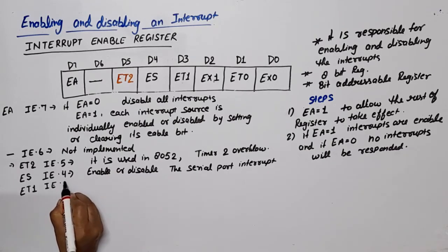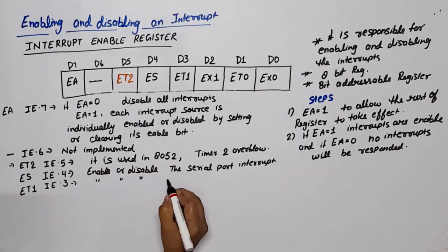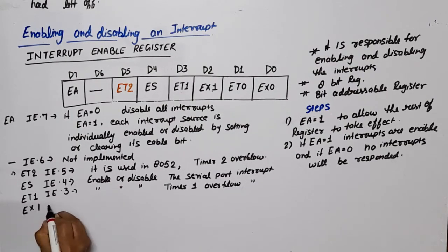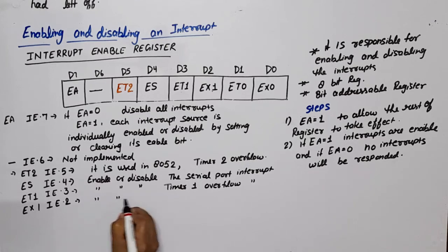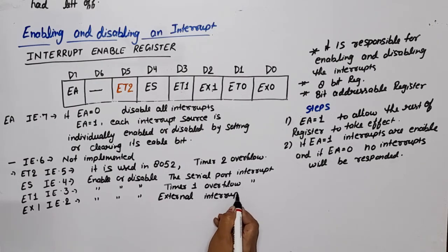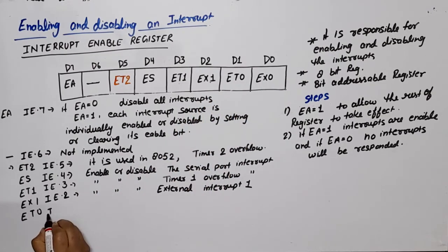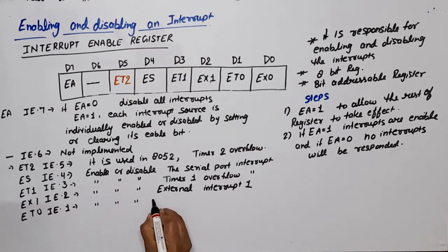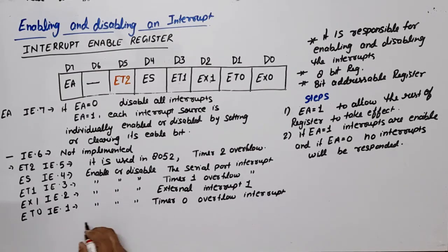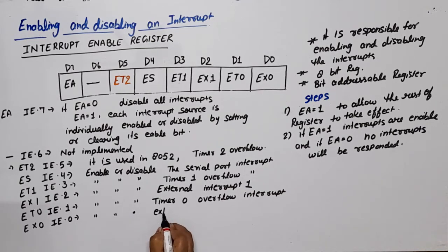ET1 at IE.3 enables or disables the Timer 1 overflow interrupt. EX1 at IE.2 is responsible for enabling or disabling External Interrupt 1. ET0 at IE.1 enables or disables the Timer 0 overflow interrupt. EX0 at IE.0 enables or disables External Interrupt 0.